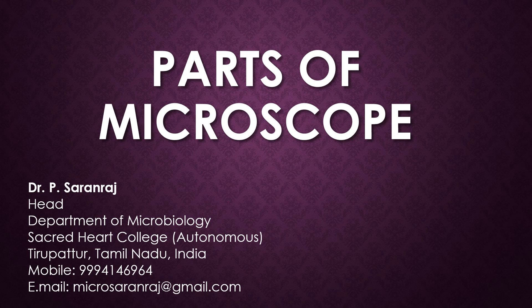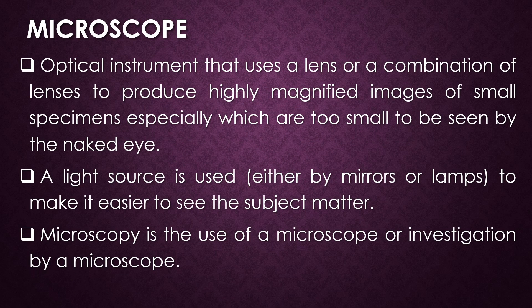Greetings. This video is about the various parts of the microscope. A microscope is an optical instrument that uses a lens or a combination of lenses to produce highly magnified images of small specimens, especially microbial cells which are too small to be seen by the naked eye. A light source — either a mirror or lamp — is used to make it easier to see the subject. Microscopy is the use of a microscope or investigation by microscope.